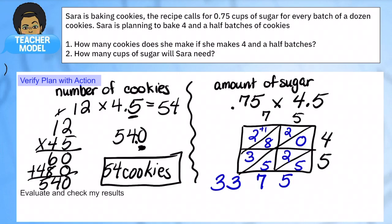Remember, we need to count the number of digits to the right of the decimal. So in our factor, in seventy five hundredths, we have two digits behind the decimal. And in four and five tenths, we have one. So all together, that's three digits to the right.